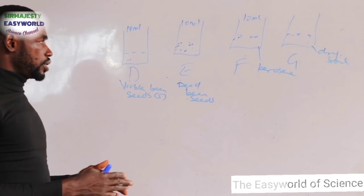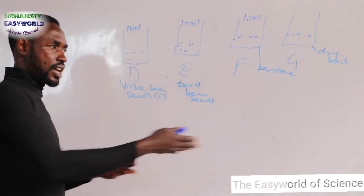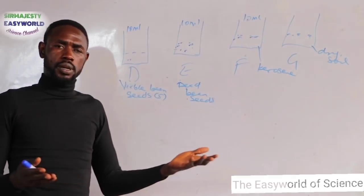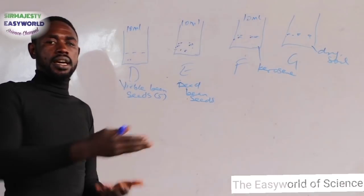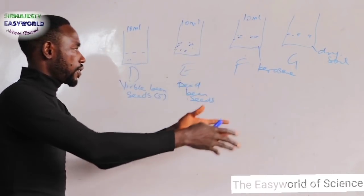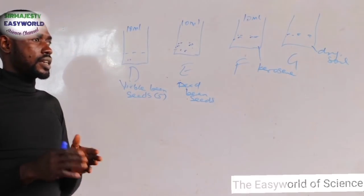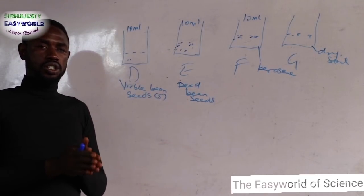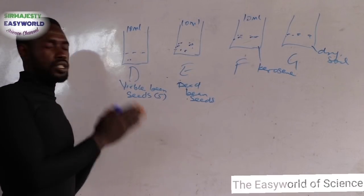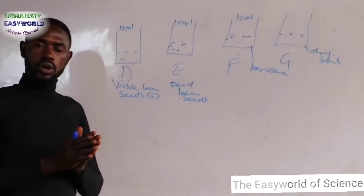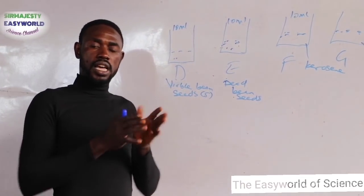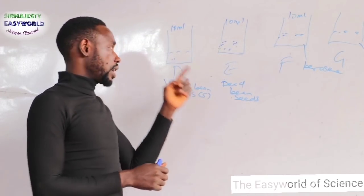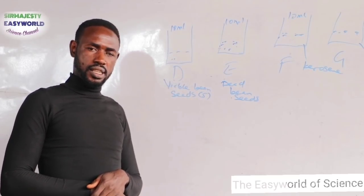Why am I explaining this? Because you might be told, the way they will ask that question, they will give you a little story about this thing before they can confidently ask you questions. They might tell you to say what is happening in D. What has happened in D is actually germination. State the conditions that favor the process in D. You state optimum temperature, presence of air or oxygen, water or moisture, and viability of the seed.